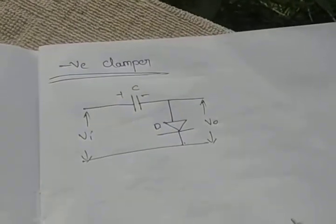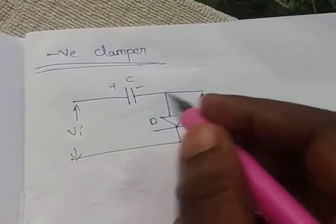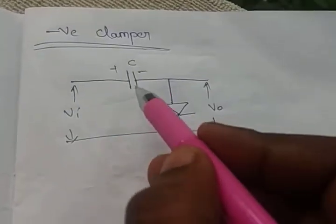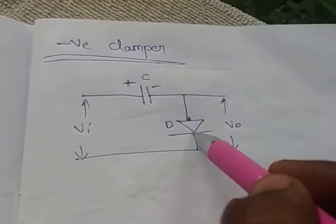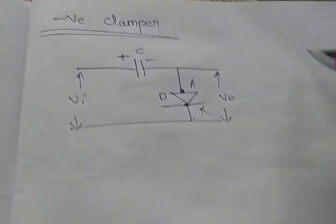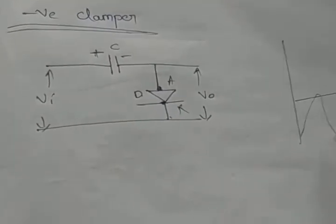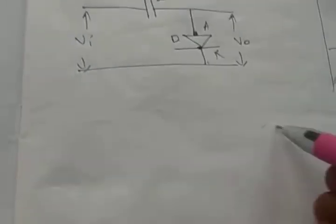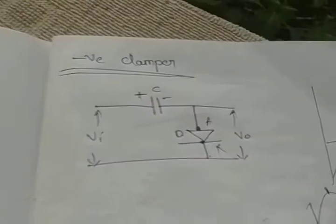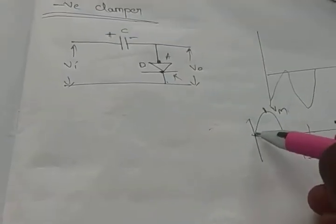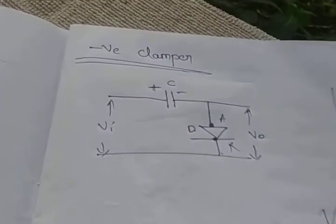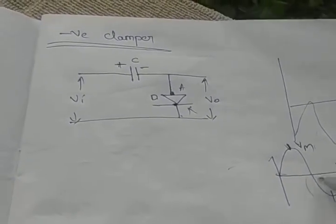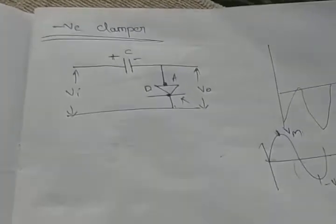Now let us see the operation of the negative clamper. In this circuit, the capacitor is connected to the positive terminal, the cathode is connected at the output side, and the anode is connected at the input side. The required output shifts the positive extremity to the negative level. From 0 to Vm, the capacitor is in the charging portion, so there is no output.